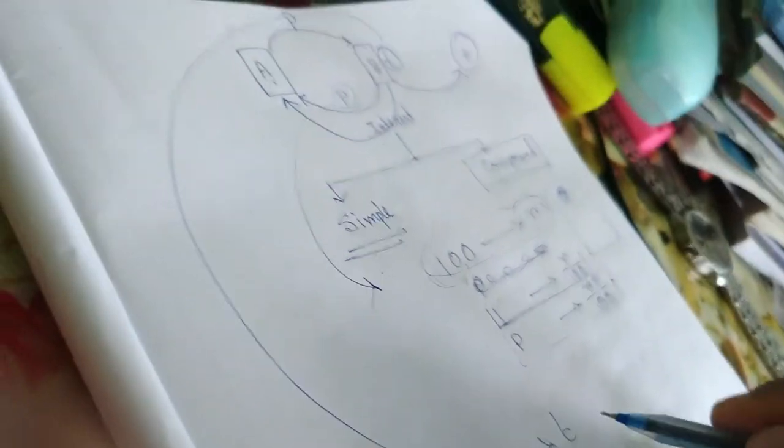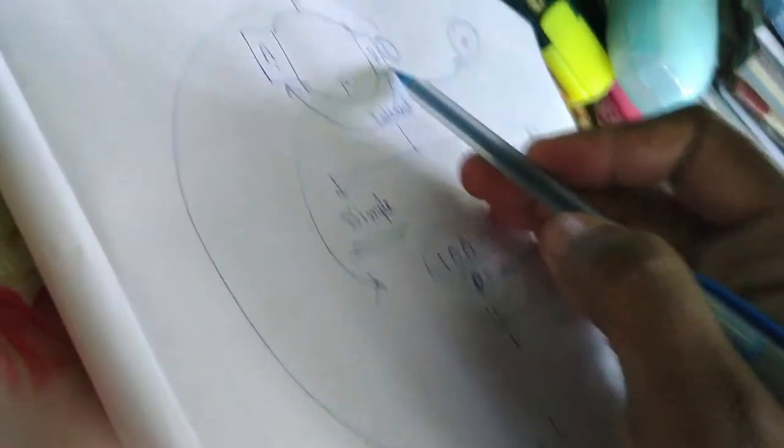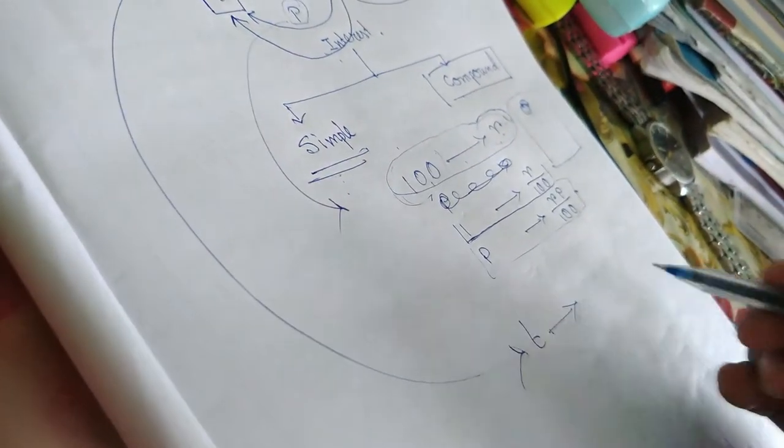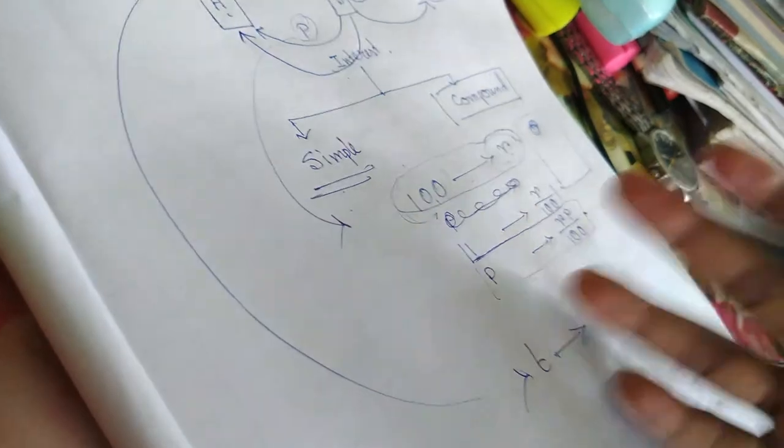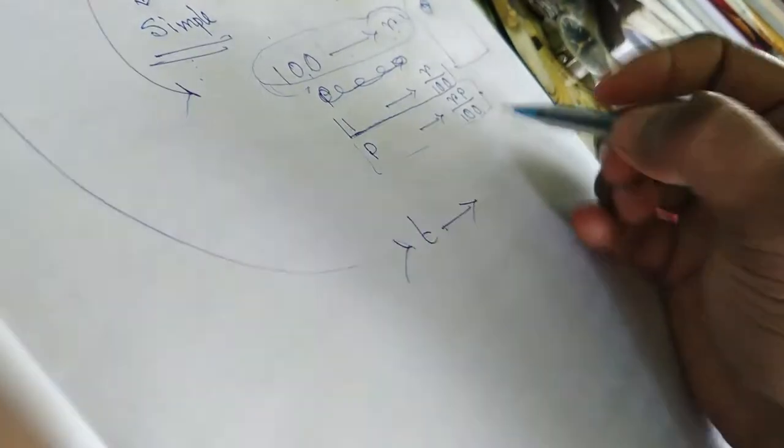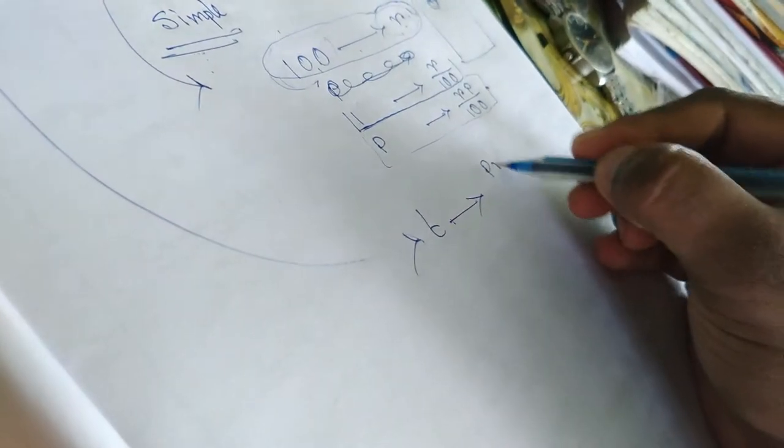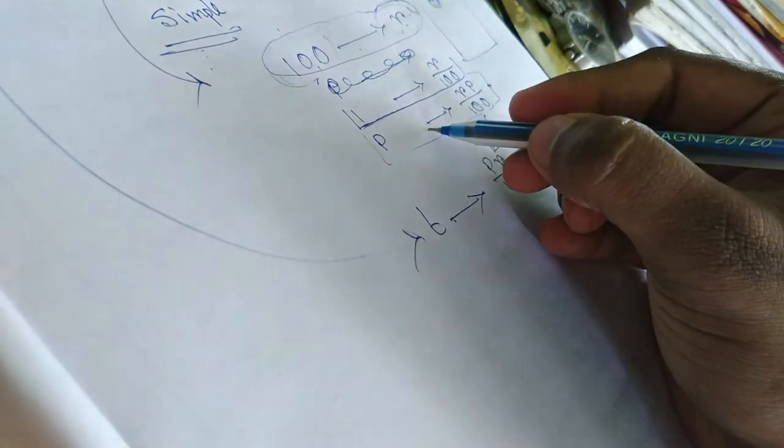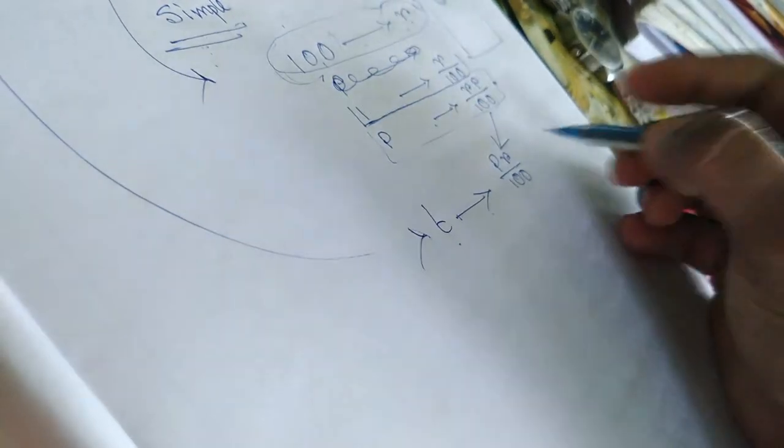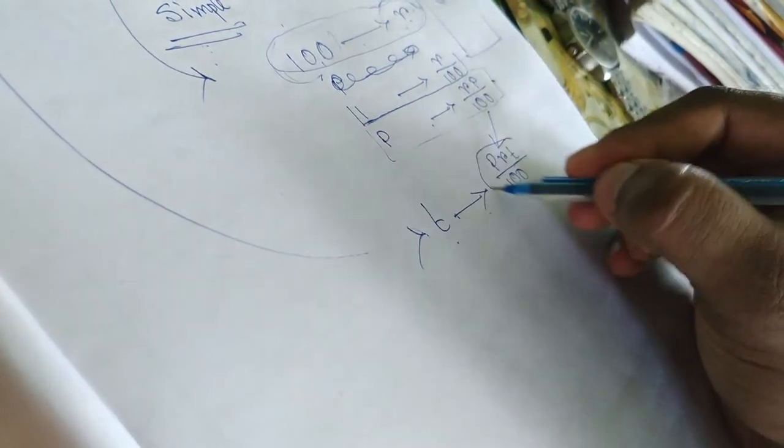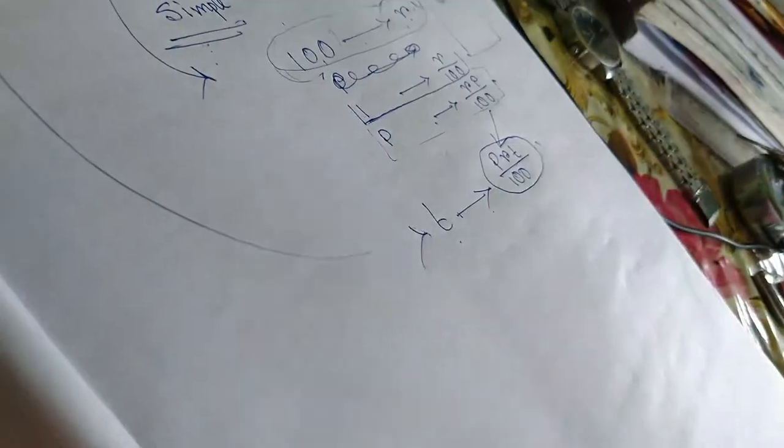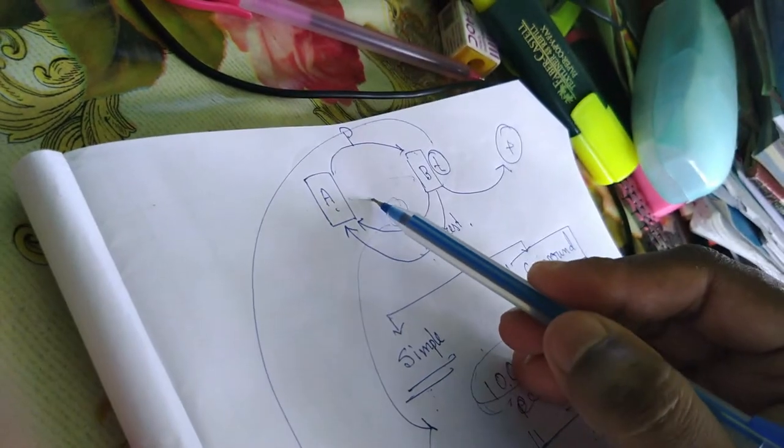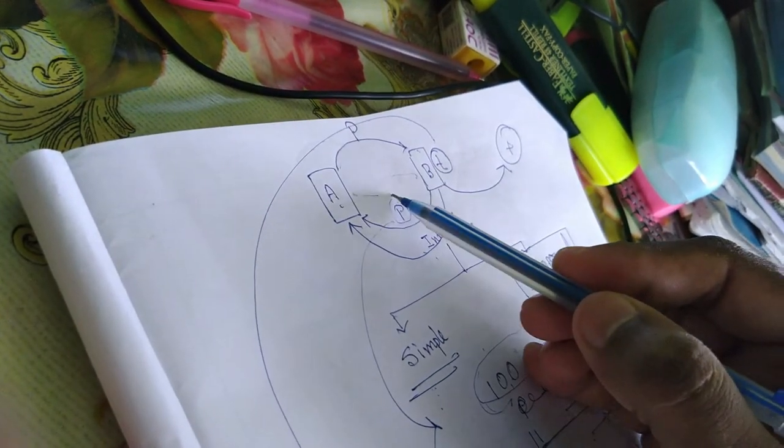If B keeps that money for T years, then the total amount of simple interest after these T years will be P times R divided by hundred, and this one is for one single year, therefore for T years it will be PRT divided by hundred.